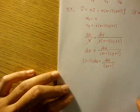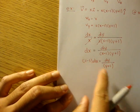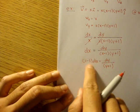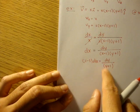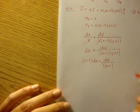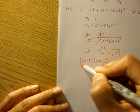And now we have same variables or similar variables, x and x and y and y. We have them on the same side. We're good. We can now integrate both sides.